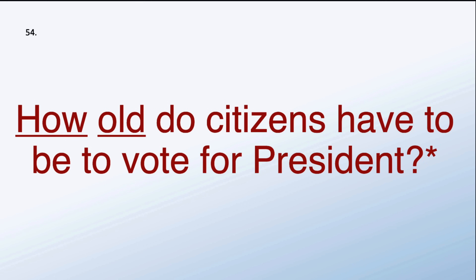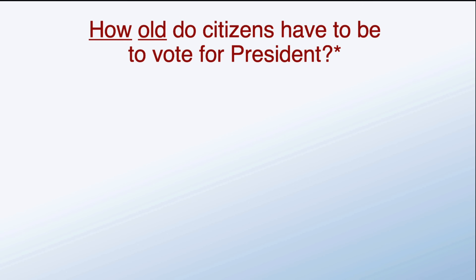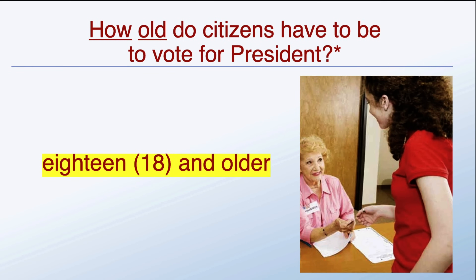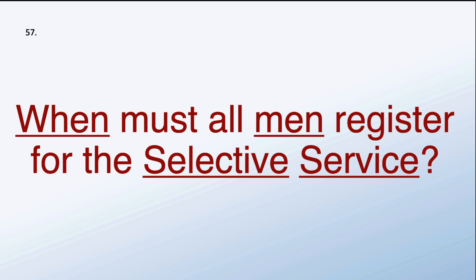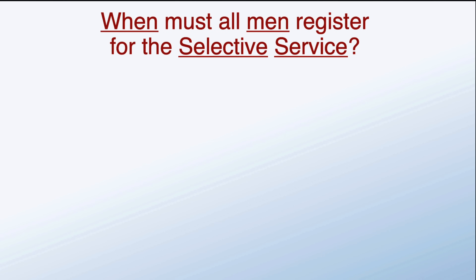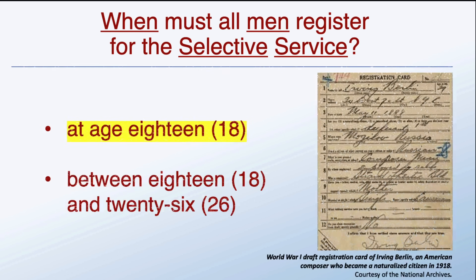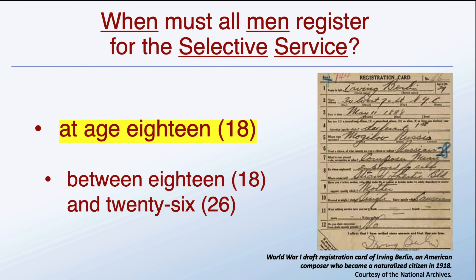How old do citizens have to be to vote for president? Eighteen and older. When must all men register for the Selective Service? At age 18 — specifically between 18 and 26.